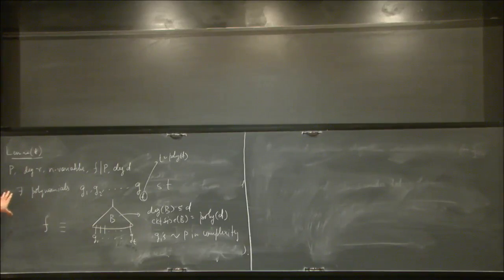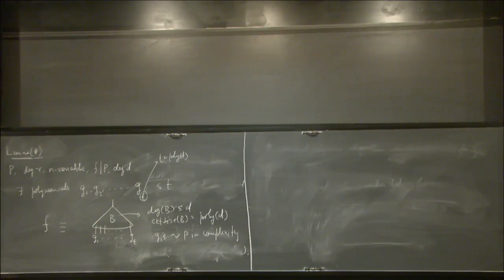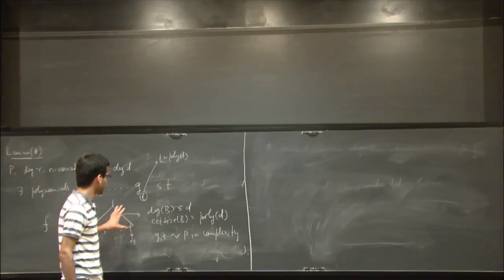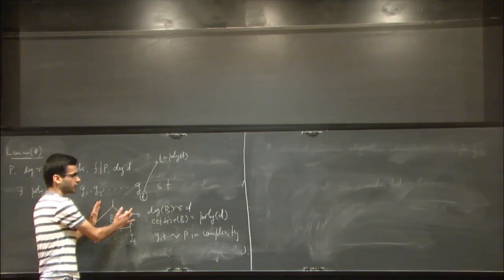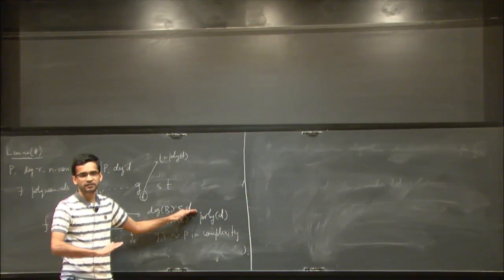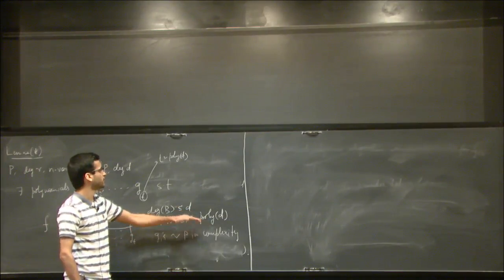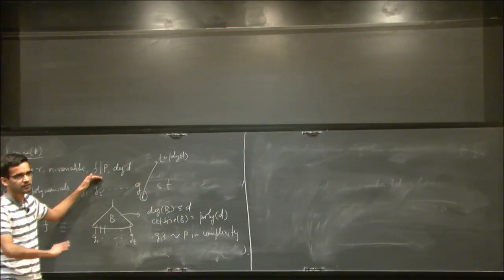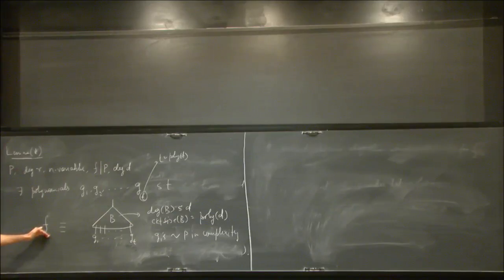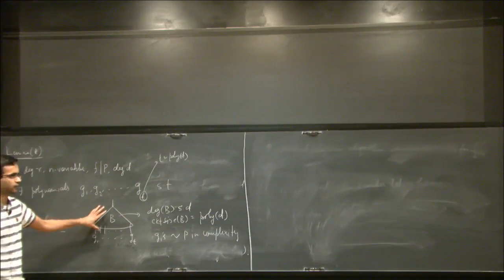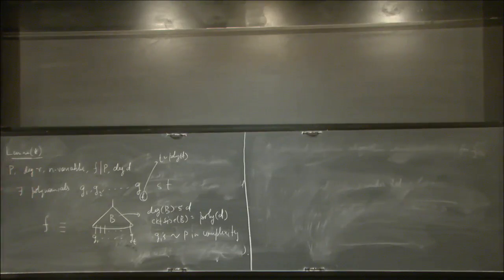So let's first use the lemma and prove most of what we have here, then go back and prove the lemma. The most important fact that comes out of this lemma is that if you are looking at a low-degree factor, this module you put on top doesn't depend on any other parameter. It does not depend on the number of variables in the original polynomial, or the degree of the original polynomial, or the individual degree. It just depends on the degree of the factor you are after.